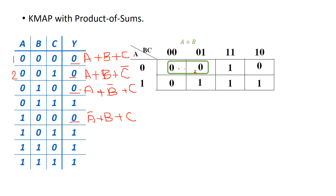Let's find another group. I see a vertical group. In that case, A changes so we don't include A as a group variable. B does not change and C does not change. Both B and C are equal to 0, so we write that red group as B OR C.